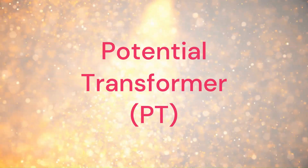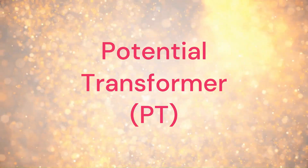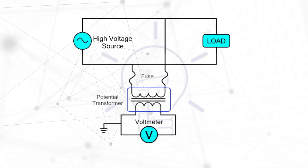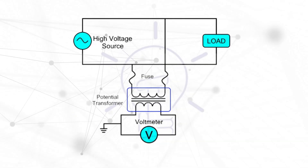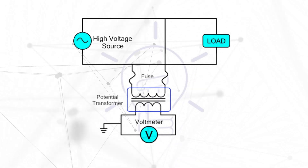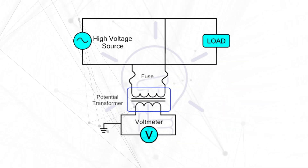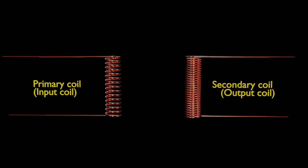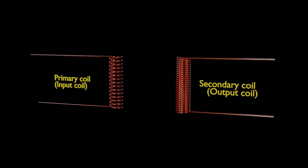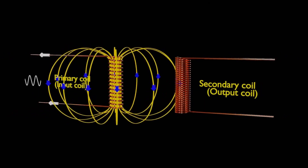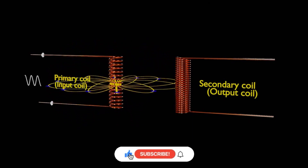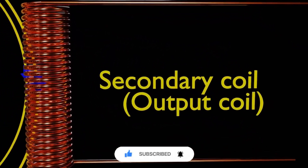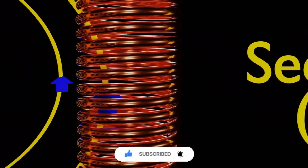Next, we have potential transformers, or PTs. A PT is all about stepping down high voltages to safer, measurable levels. They are commonly used for accurate voltage measurements. Similar to CTs, PTs operate on the principle of electromagnetic induction. The primary voltage induces a proportional voltage in the secondary winding, which can be accurately measured or used in various applications.